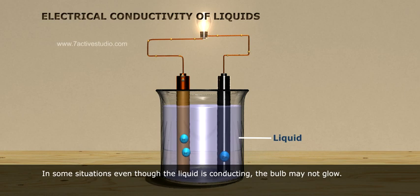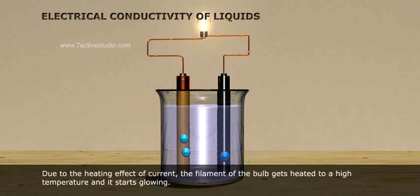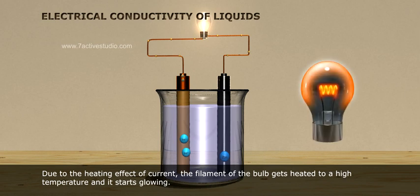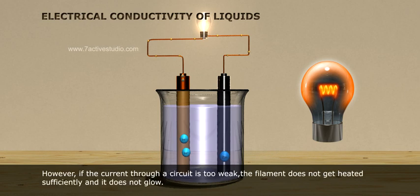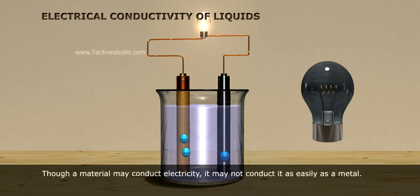In some situations, even though the liquid is conducting, the bulb may not glow. Due to the heating effect of current, the filament of the bulb gets heated to a high temperature and it starts glowing. However, if the current through a circuit is too weak, the filament does not get heated sufficiently and it does not glow.